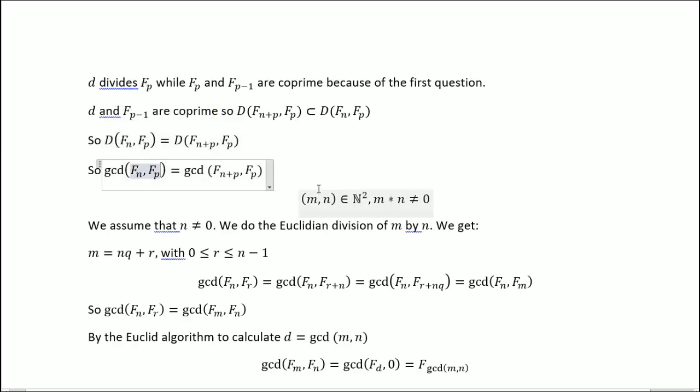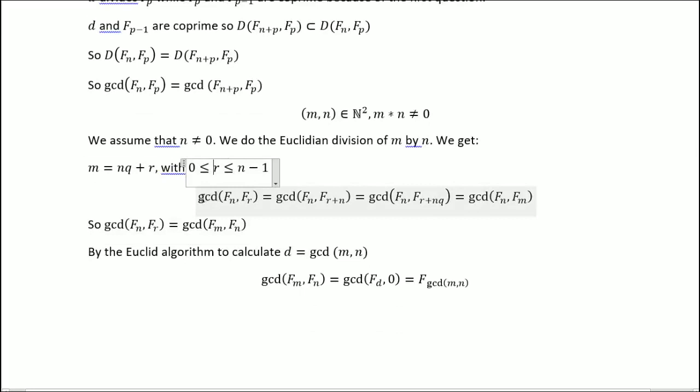So now we'll take m and n integers with m or n not both equal to 0, and I'll assume n is not equal to 0. So we do the Euclidean division of m by n, and we get this with this equality. So by doing the Euclidean division, because you have r, you will add n until you get nq. So you do this and then you iterate. You get this and this equals m. So we get this equality.